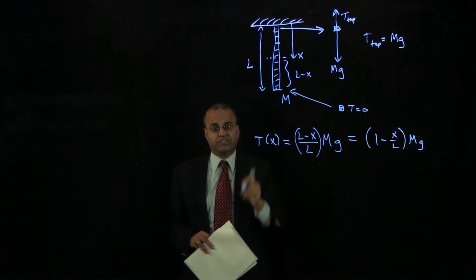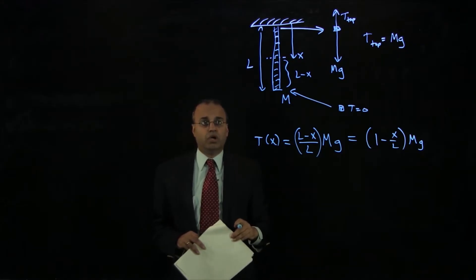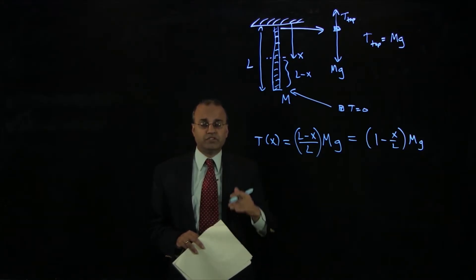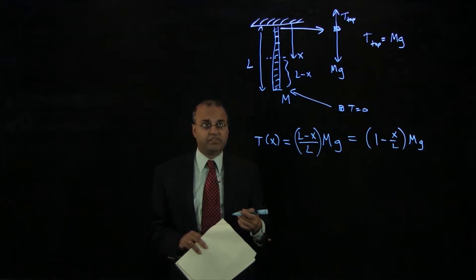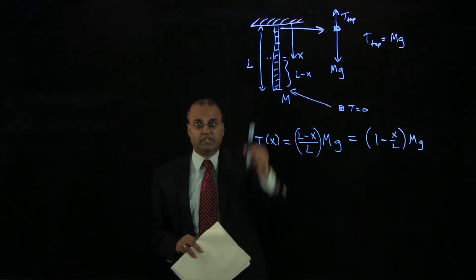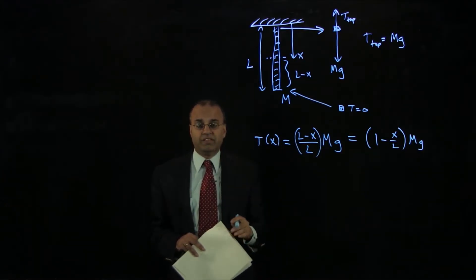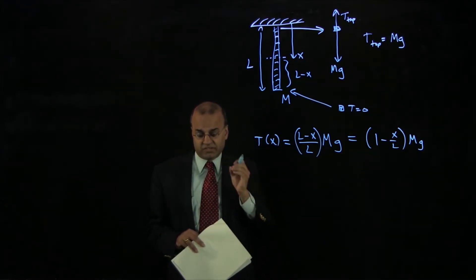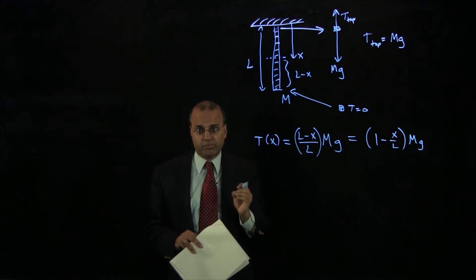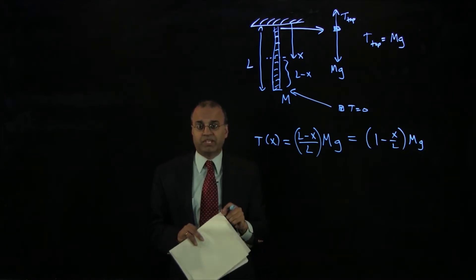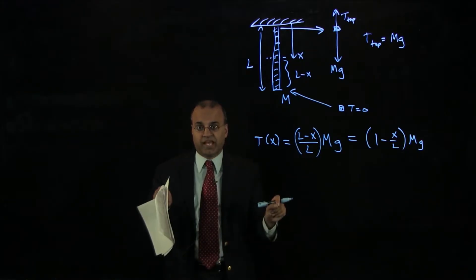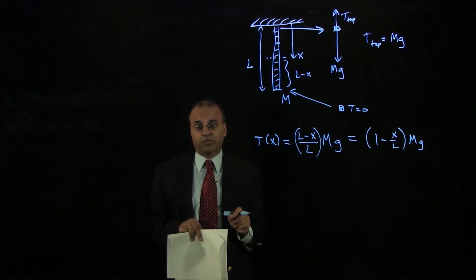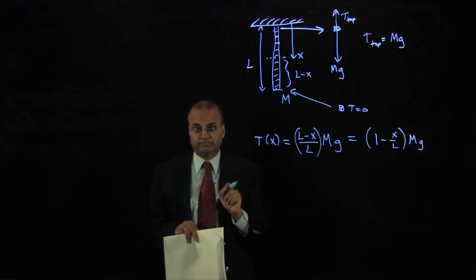I'd like to use the same example to introduce another, more elegant way of analyzing what the tension is as a function of position on the rope. This is going to be a little bit more complicated, but it's a much more powerful method — one that we can generally use for any continuous distribution of mass, as opposed to a point mass.